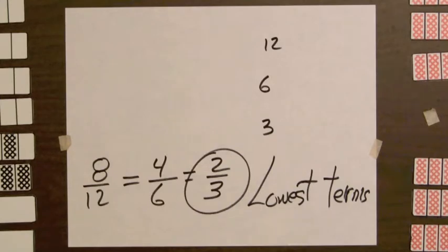In general, given any fraction, if one is the only whole number that divides into its numerator and denominator, the fraction is in lowest terms.